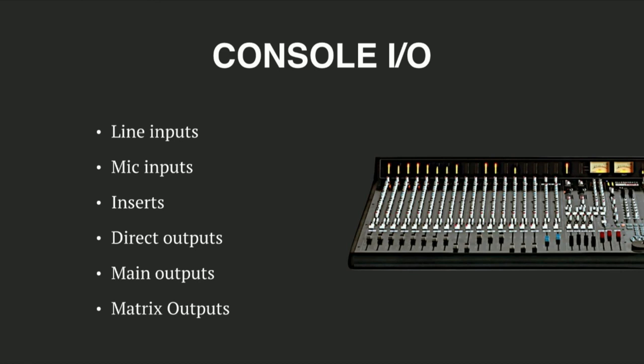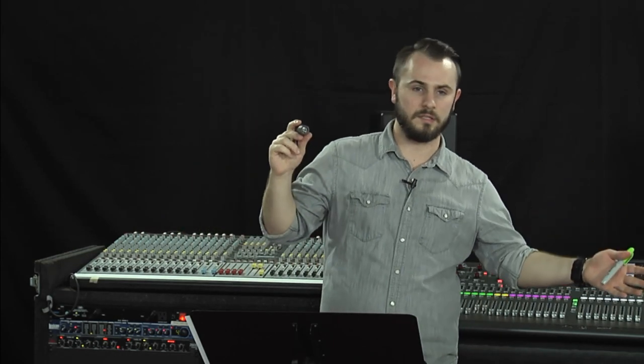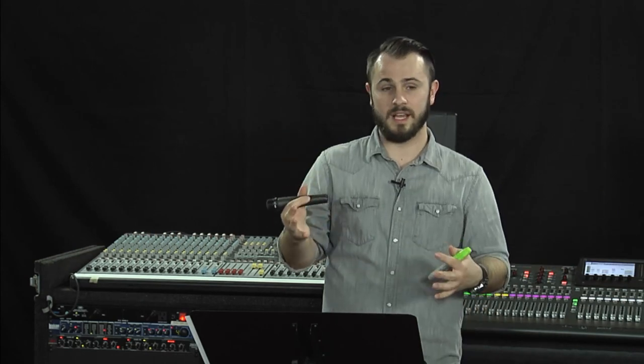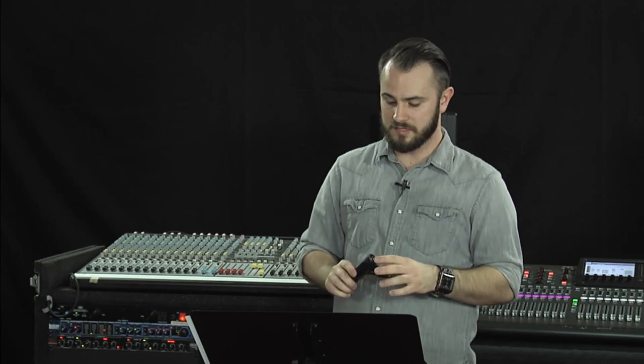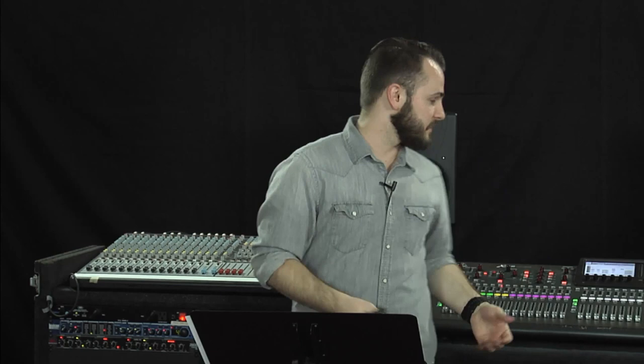What this refers to is the level of the signal coming off of the source that you're plugging in. A microphone in and of itself puts out an extremely low output level. That's why you never necessarily see a microphone plugged directly into a speaker, because you wouldn't be able to hear it. The output level and voltage that comes off the back - that is an XLR connection, a little three-prong - which can be used for multiple things. The XLR connection type is what it is, but basically coming off of this microphone itself, it does generate an output, but it's not nearly enough to hear on its own.